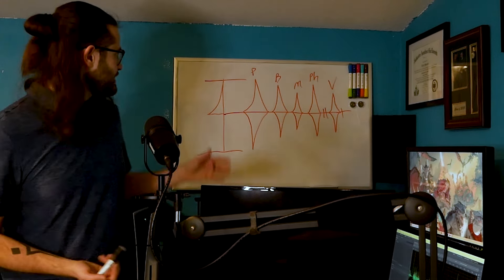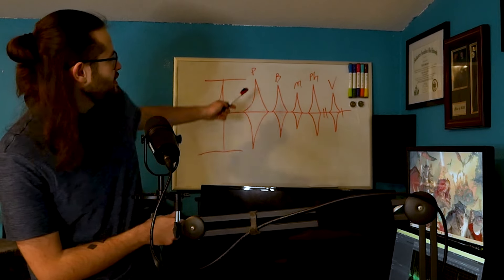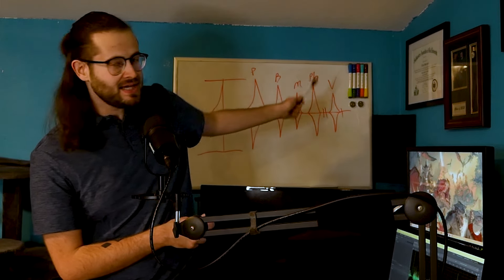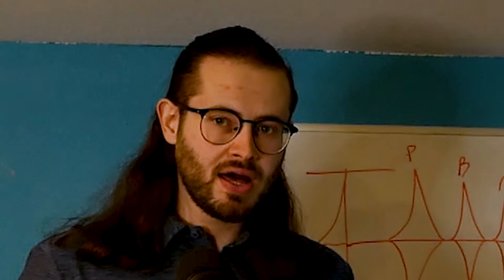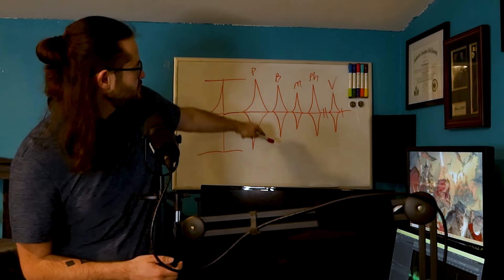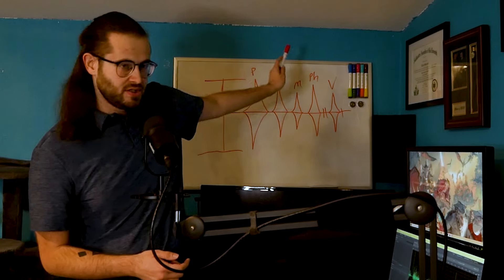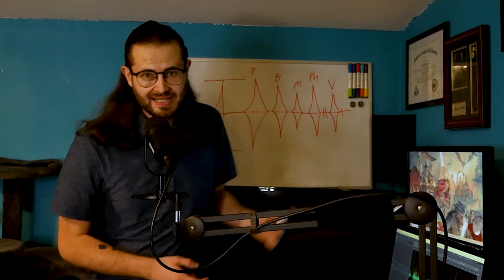For an example, this is the P set: P, B, M, PH, V. Follows the exact same pattern. Full, two-thirds, one-third, two-thirds two slashes, one-third one slash.